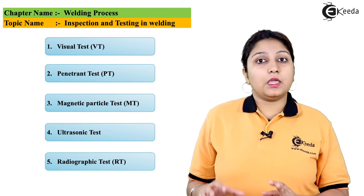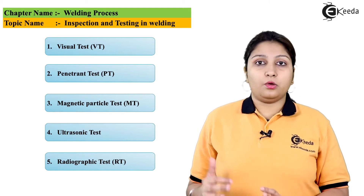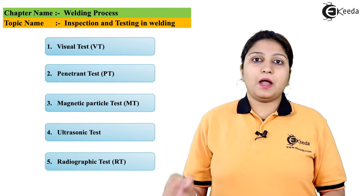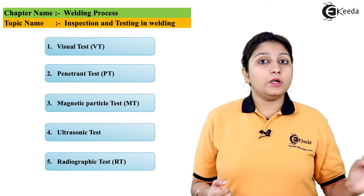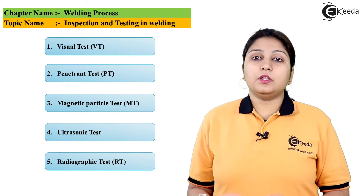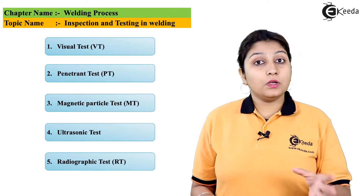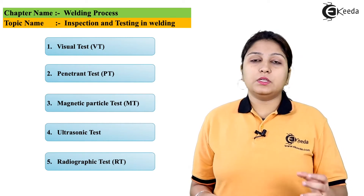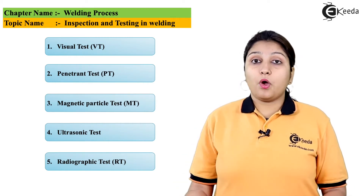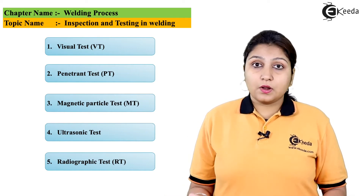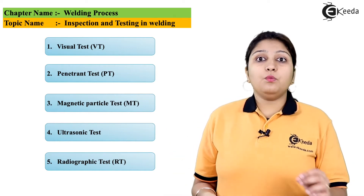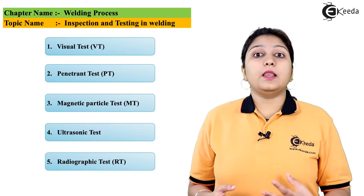This test is known as magnetic particle testing. Iron particles are present in your weld, so defects can only be detected by using a magnet. Basically, you can detect voids, cracks, and inclusions like slag inclusion through magnetic testing.